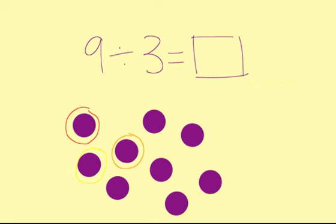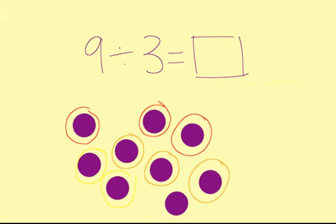Now, I can circle some more. One more for group red, one more for group orange, and one more for group yellow. Now, do I have enough more to put into three groups? Well, I have three more, so it seems like it. One more for red, one more for orange, and one more for yellow.